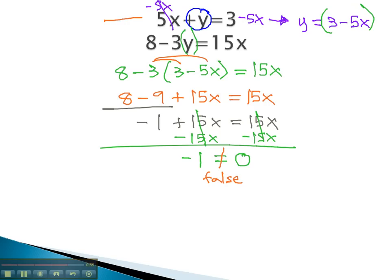What this tells us is the original system of equations will never be true working together. If something works in one equation, it will not work in the other equation. We say there is no solution.